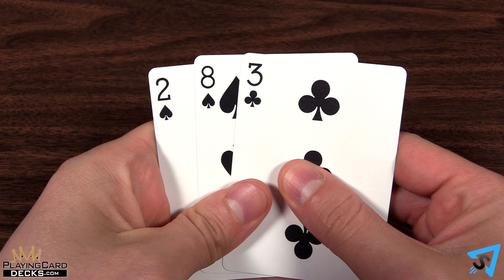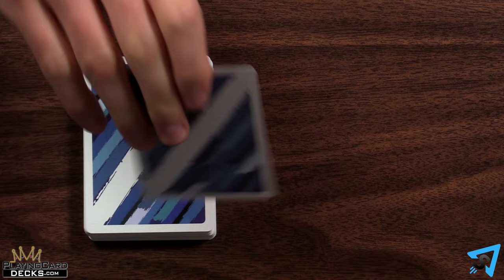The remainder of the deck is placed face down in the middle of the table as a stock, and the top card is flipped over to start a discard pile.